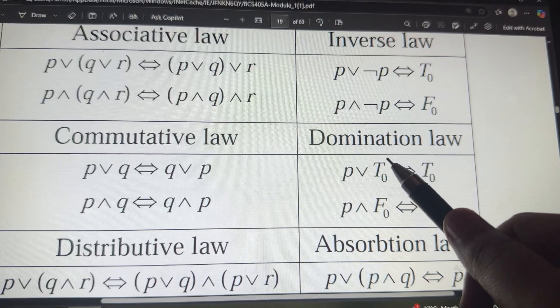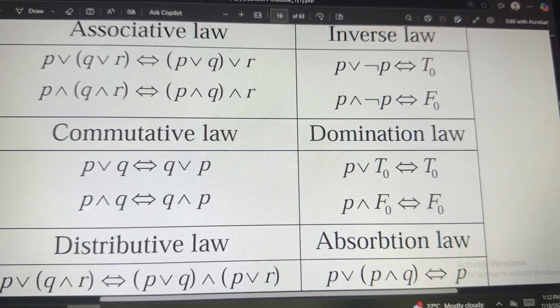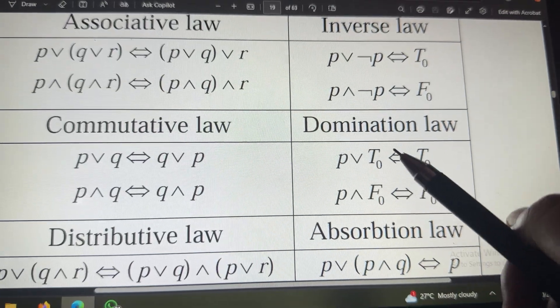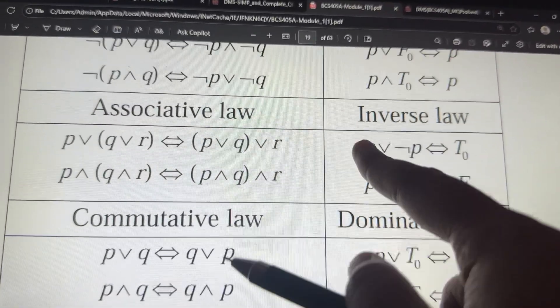Dominating law, where the letter true, T means true and false dominate. So, true and false is going to dominate. Then, we will come to this side.